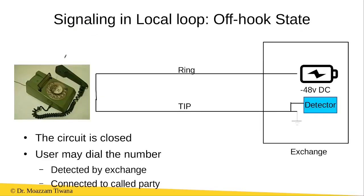When the user lifts the handset of the telephone, this switch is closed and the telephone is now said to be in the off-hook state. The user starts getting the dial tone and the exchange detects using this detector that the user has lifted the handset and the telephone is in the off-hook state. After that, the user dials the number, and this dialed number is again detected using this detector, and then the exchange connects this telephone to the called telephone or called party.